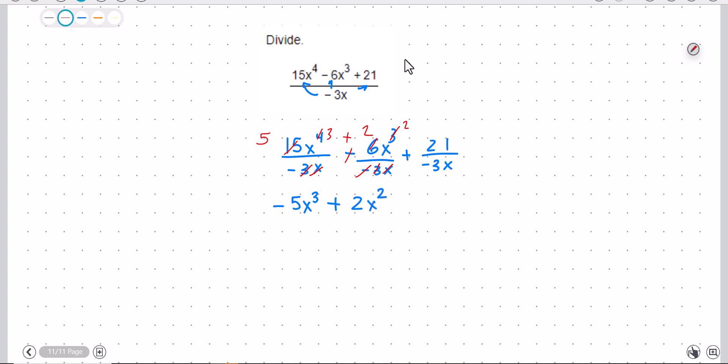And then finally, negative 3 into 21, that'll be negative 7. And there's no x's on the bottom to cancel with any on the top.